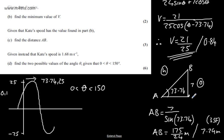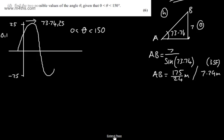So all I'm doing is considering when we have a minimum value of V, that's where it occurs, and that is when the angle is 73.74. Okay, moving on. Given instead that Kate's speed is 1.68 meters per second in part D for six marks, we need to find the two possible values of the angle theta, given that theta is between 0 and 150.